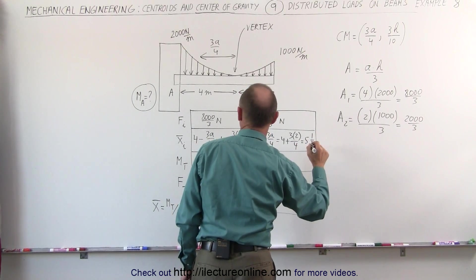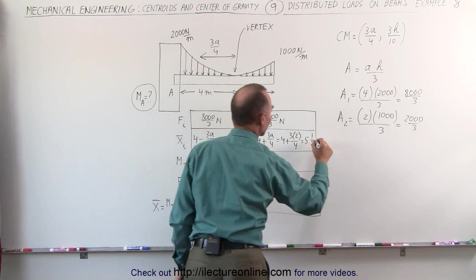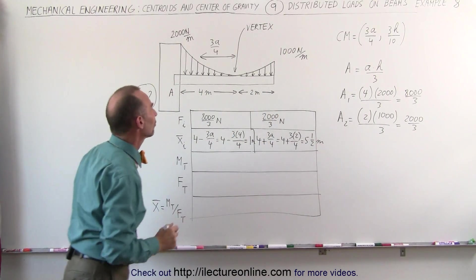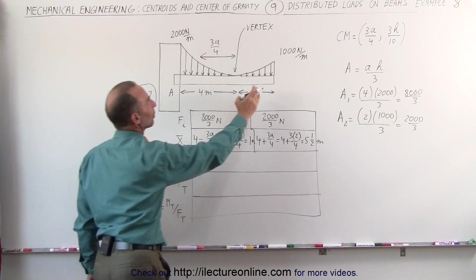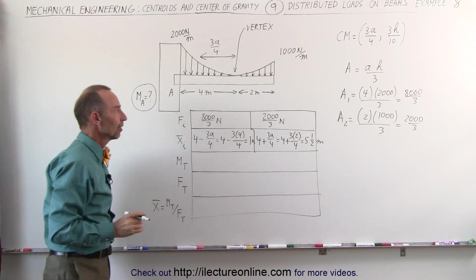5 and a half meters, I should put units down, that's meters and that's meters, 5 and a half meters from point A, that's where the centroid is for that particular segment.